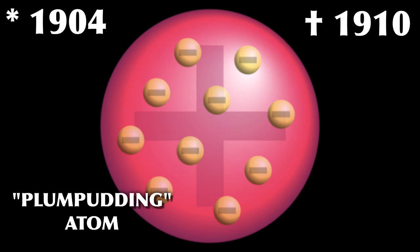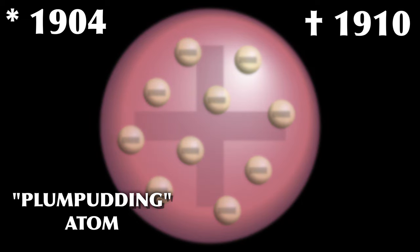But despite its promise, Thomson's plum pudding model was short-lived. It was falsified just a few years later by one of Thomson's former students, Ernest Rutherford. We will go more into this in the next video, but suffice to say that the plum pudding arrangement was wrong. The most important part of Thomson's legacy was finding the electron and figuring out that it is a part of all atoms. The only thing he did get wrong was how the electrons are arranged inside the atom.